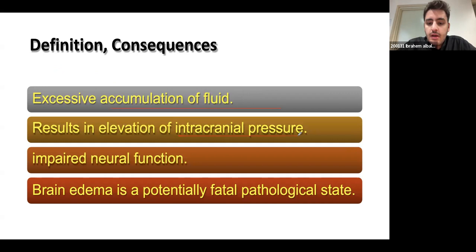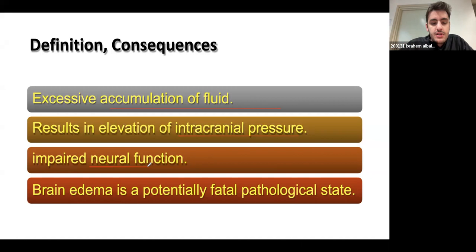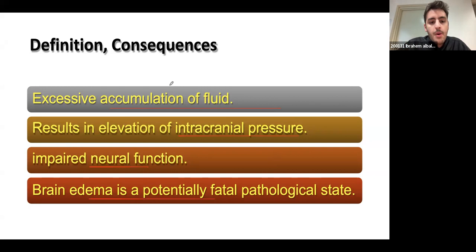Brain edema leads to increased intracranial pressure and hence impairs neural function. As you know, the brain is found in a confined space — the skull — and there's only limited room for extra pressure. Whenever there is a buildup of fluid, blood, or hemorrhage, you get compression of the neural tissue, which is usually fatal. Just understand the definition; don't memorize it word for word.